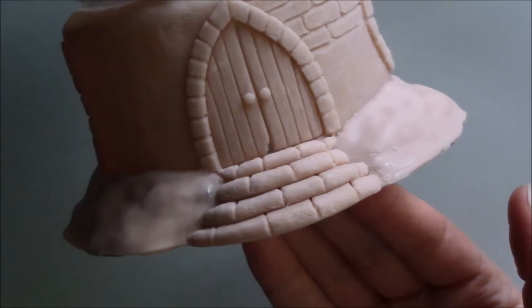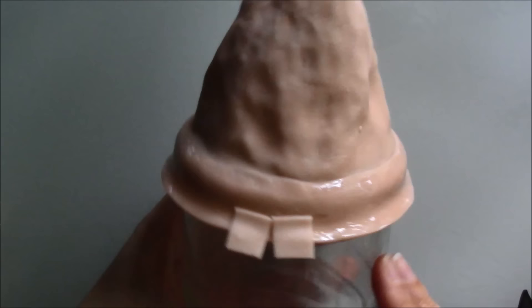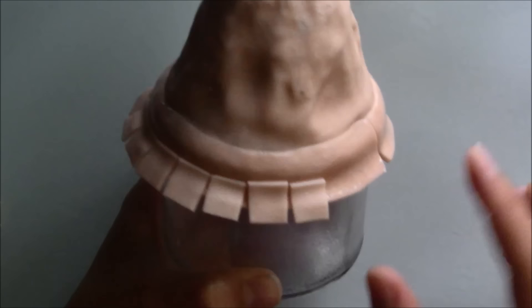Adding the tiles. This is a task not for the easily discouraged. I spread Fimo liquid on the roof and placed those little squares one by one. I textured them before adding them to the roof and kept them a bit flared.